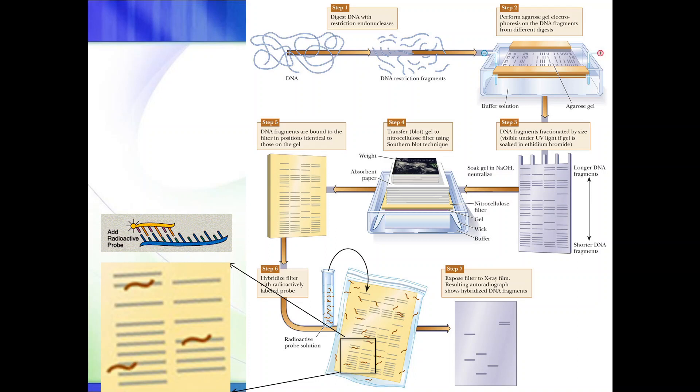Remember that the probe is labeled, meaning that it gives a signal. So this position right here would emit a signal. This signal can be detected, since we're using radioactivity, by placing an x-ray film on top of the membrane. The radioactivity would hit the x-ray film at certain positions where the bands are bound to the probe.